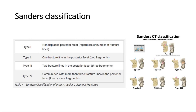This slide shows the Sanders classification. Type 1: non-displaced posterior facet, regardless of number of fracture lines. Type 2: one fracture line in the posterior facet making two fragments. Type 3: two fracture lines in the posterior facet making three fragments. And Type 4: comminuted with more than three fracture lines in the posterior facet, meaning there are four or more fragments.